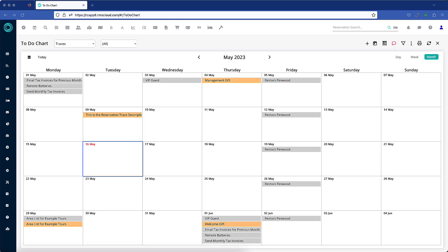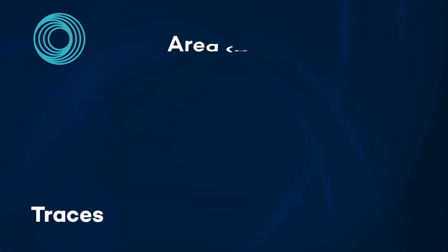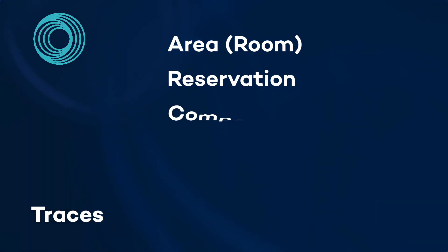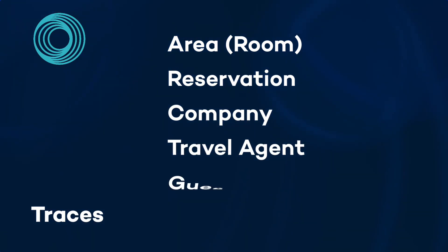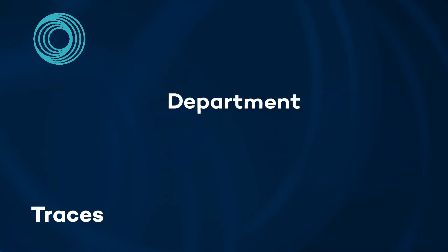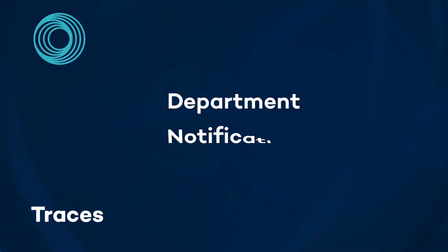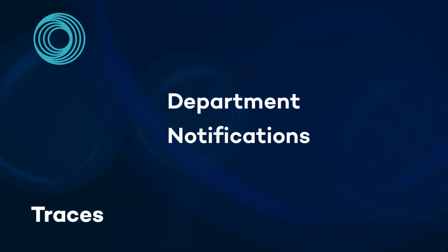Traces are displayed on the to-do chart and can be assigned to an area, room, a reservation, company, travel agent, guest, or group. Traces can be used to communicate and delegate tasks to a department, and notifications can be sent to the message centre for a specific user.